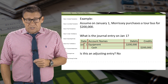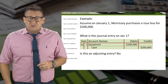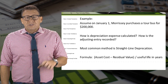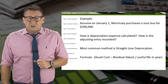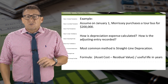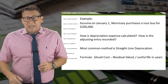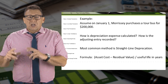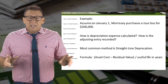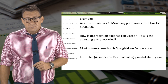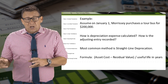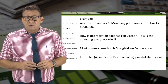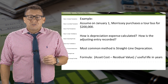This is not an adjusting entry because there is an underlying transaction that happened on January 1. Let's learn how to depreciate this bus using the simplest method. The most common method of depreciation is known as the straight-line method. This method spreads the cost of a long-lived asset evenly over the asset's useful life. The formula is asset cost minus residual value, or sometimes called salvage value, divided by the useful life in years.